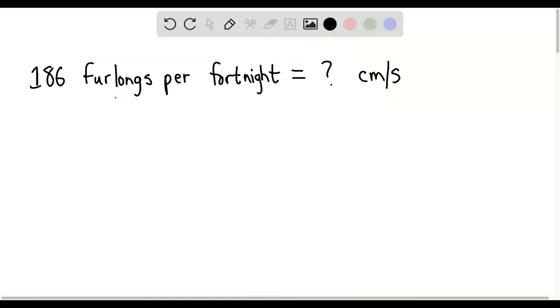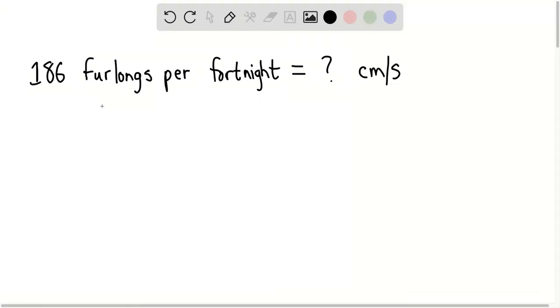We know that a small turtle is traveling at 186 furlongs per fortnight, and we want to convert this into centimeters per second.